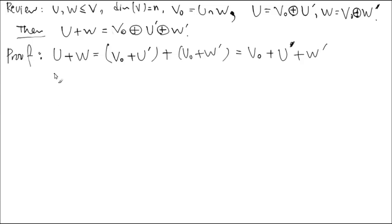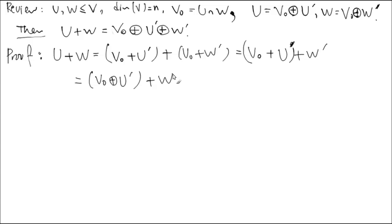When you enter the direct sum, you have to think about two things at a time. So I can group it here by associativity. Let's think about v0 and u prime — is this a direct sum? That's the definition of direct sum, so we can enter the direct sum symbol for v0 and u prime. Now the next thing is w prime, and you have to take care of that as a direct sum. I'll give you a little bit of time to think about why this space does not intersect w prime.